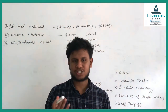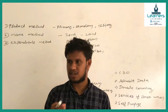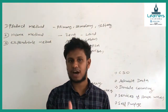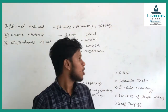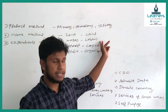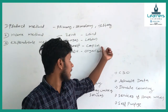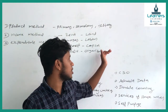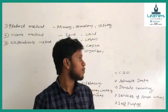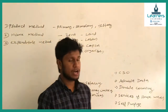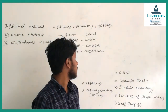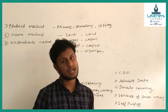How many factors of production are there? There are four factors: land, labor, capital, and organizer. In the local language these are Boomi, Turilali, Muladhanam, and Sangharanam.